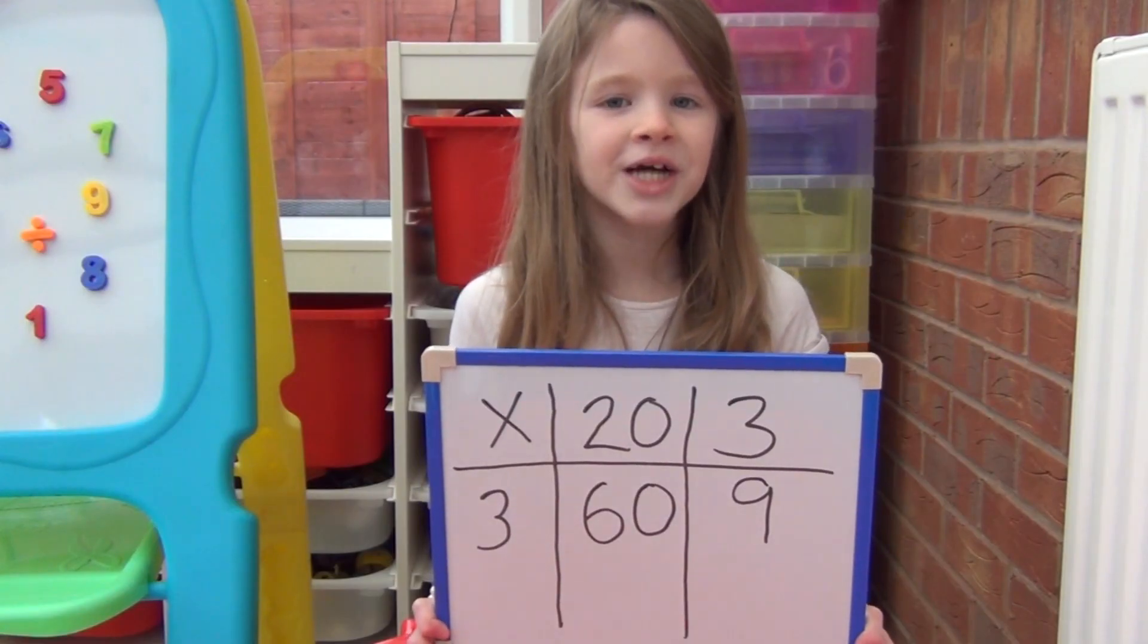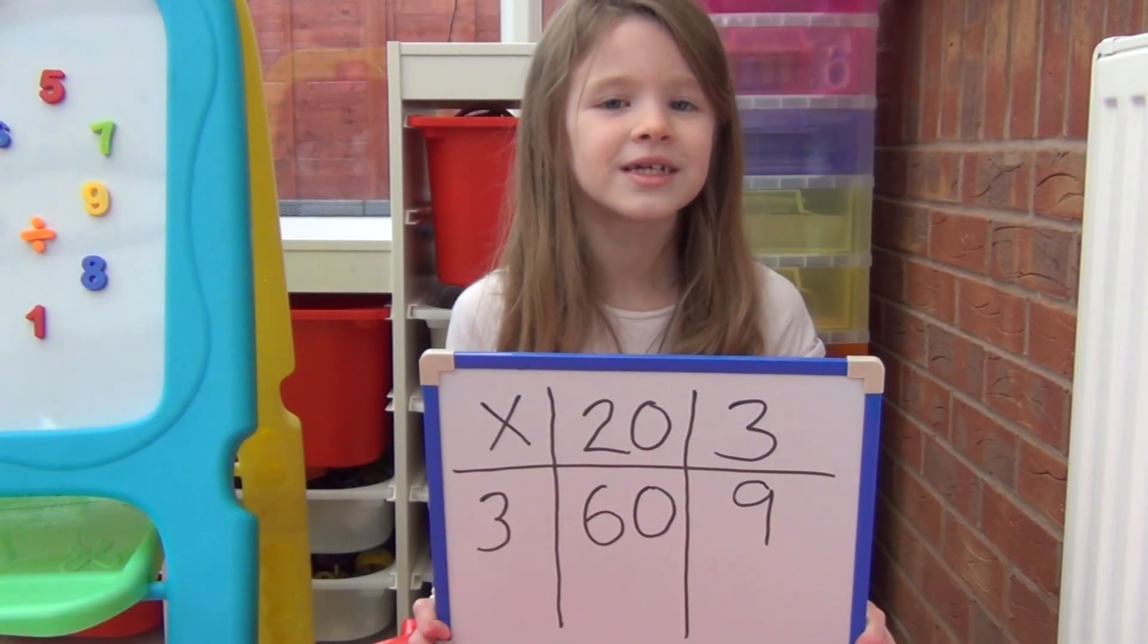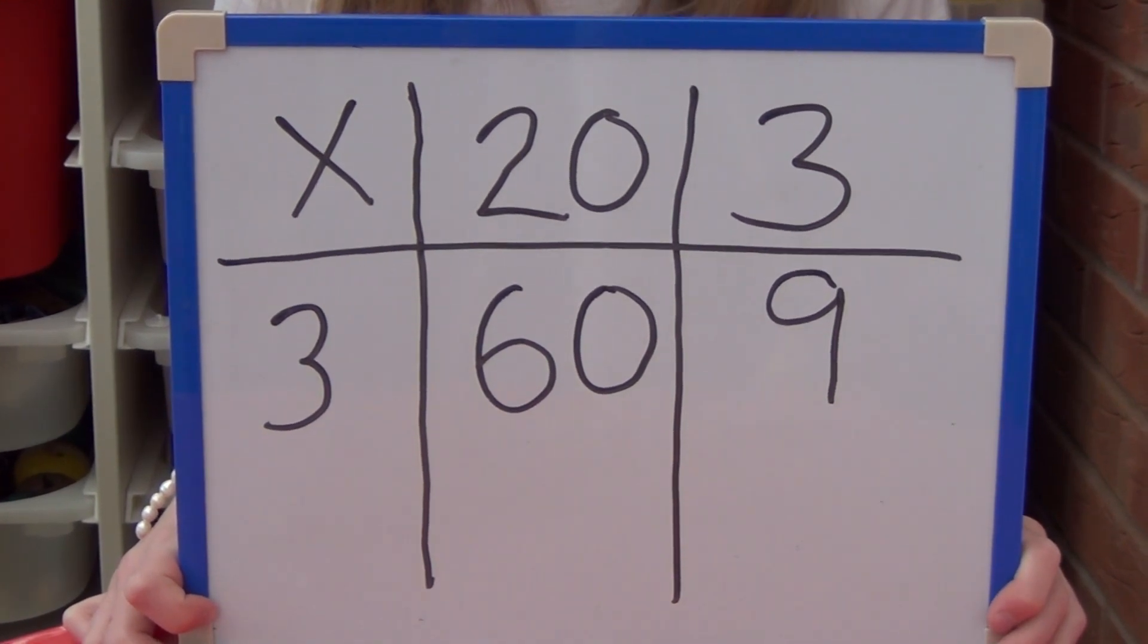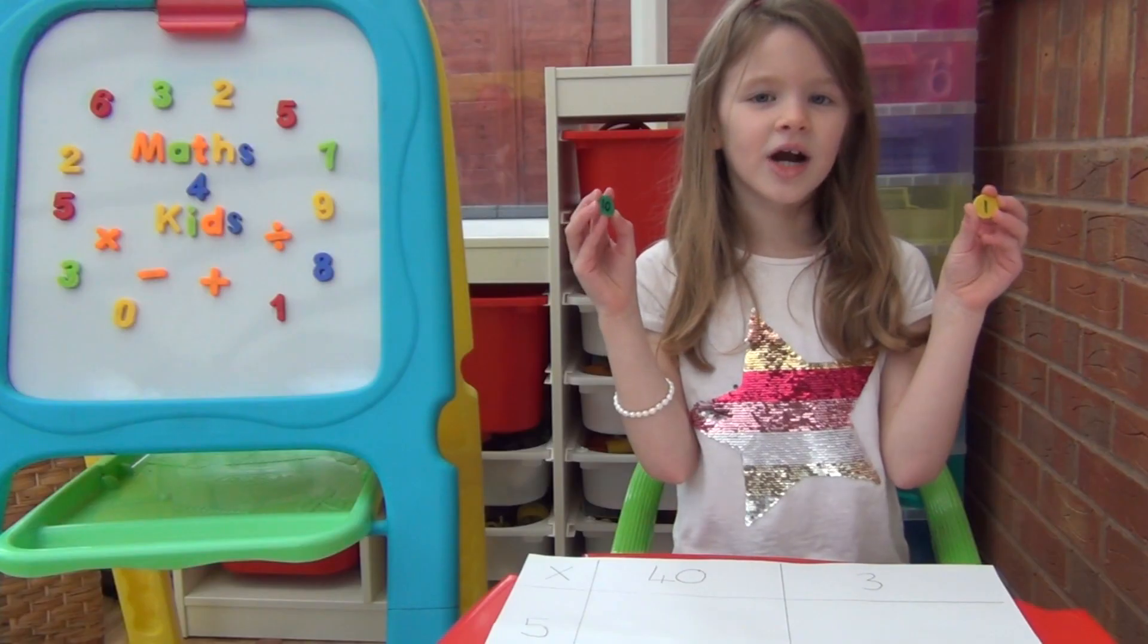You can see this if I write it on my whiteboard without the straws. Multiplication this way is called grid method. Let's try another number.